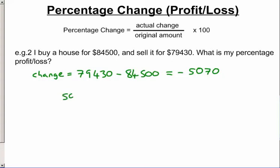It's $5,070 over the original amount of how much I spent to start with, which is $84,500. And we times that by 100 to turn that into a percentage, which gives us an answer of 6.